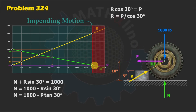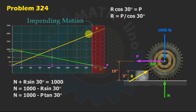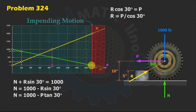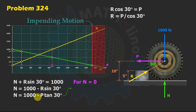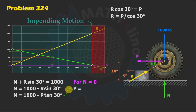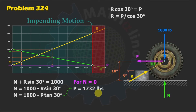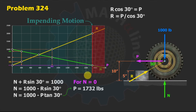From our graph, R equals 2,000 pounds at impending motion. We can calculate P from our equation: when N equals zero, P equals 1,000 divided by tangent of 30, which gives 1,732 pounds. Our solution goes directly to the condition of impending motion.